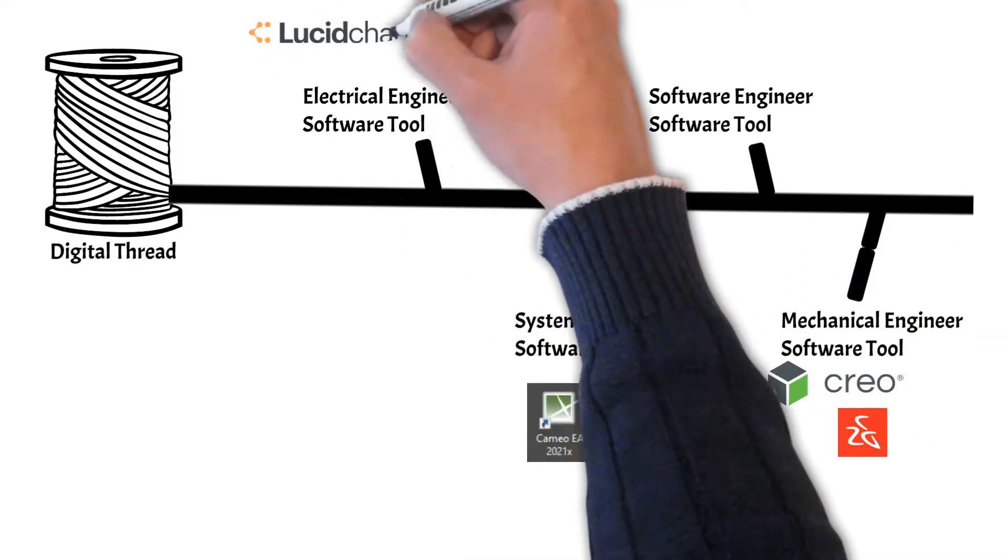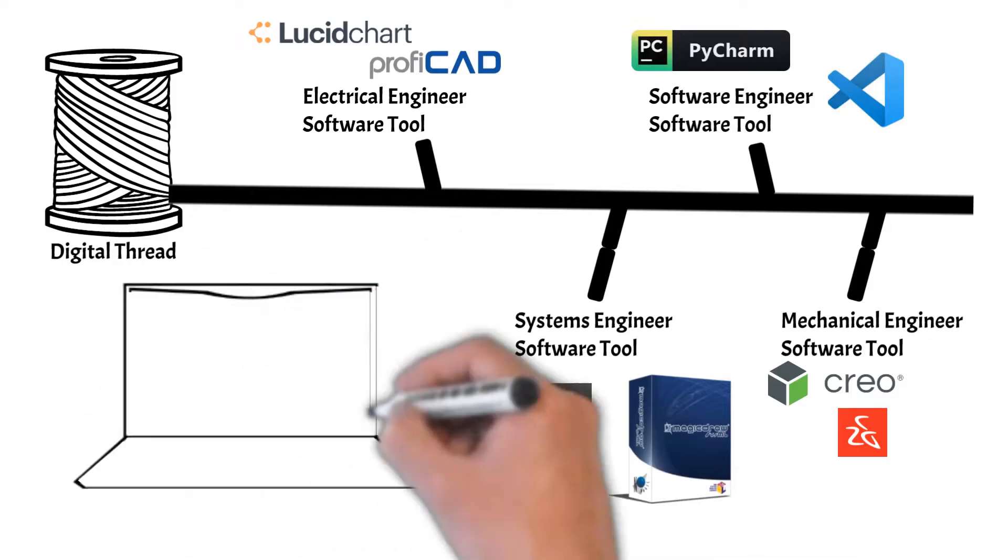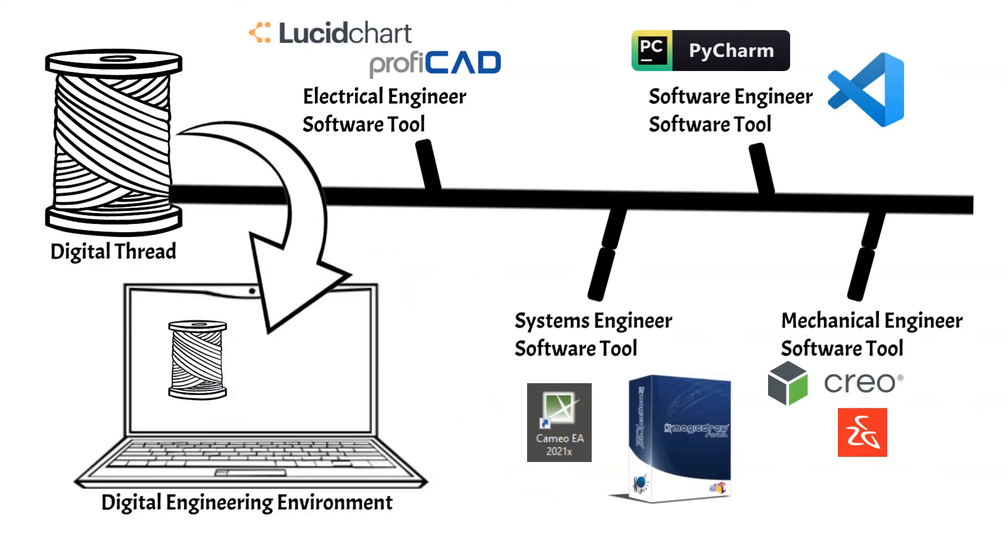The digital thread creates an authoritative source of truth for all aspects of data regarding the system of interest. Specific engineering disciplines will be able to gather and utilize relevant and current system data. This data exchange requires all parties involved to be working on the same digital engineering environment or ecosystem.